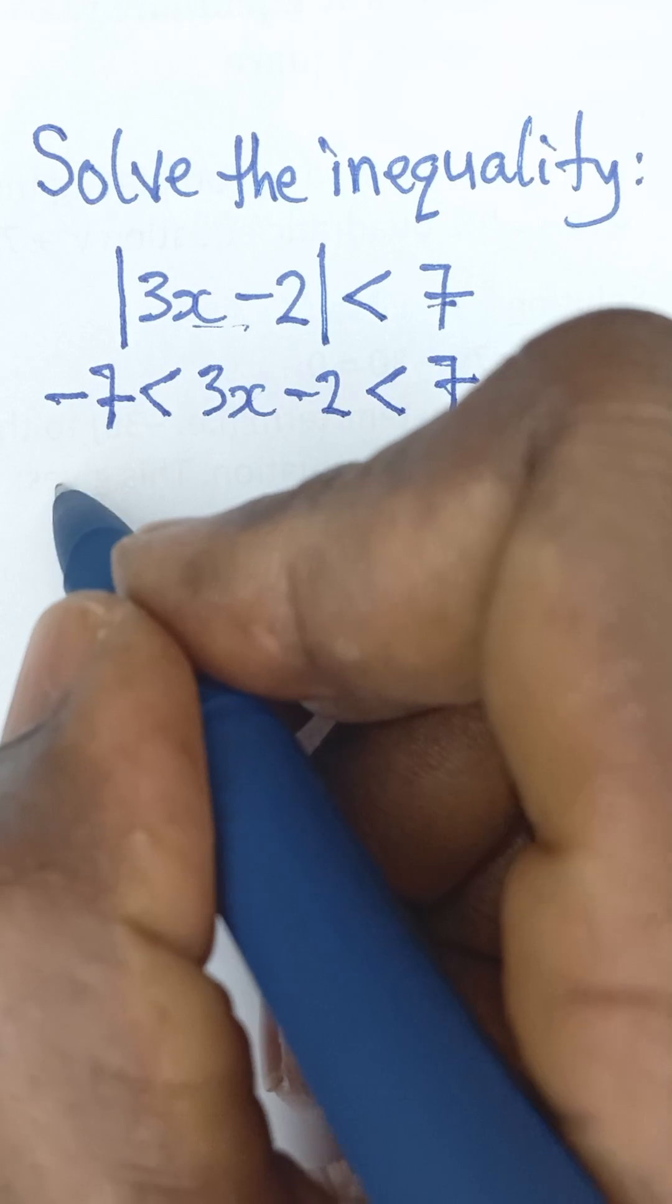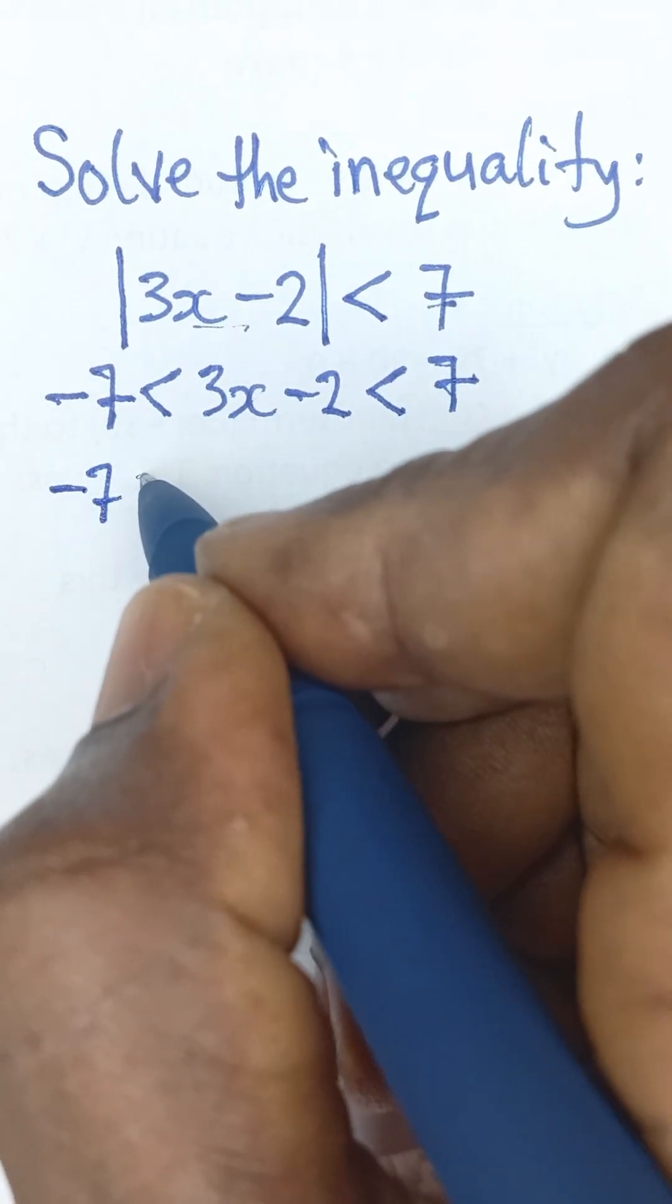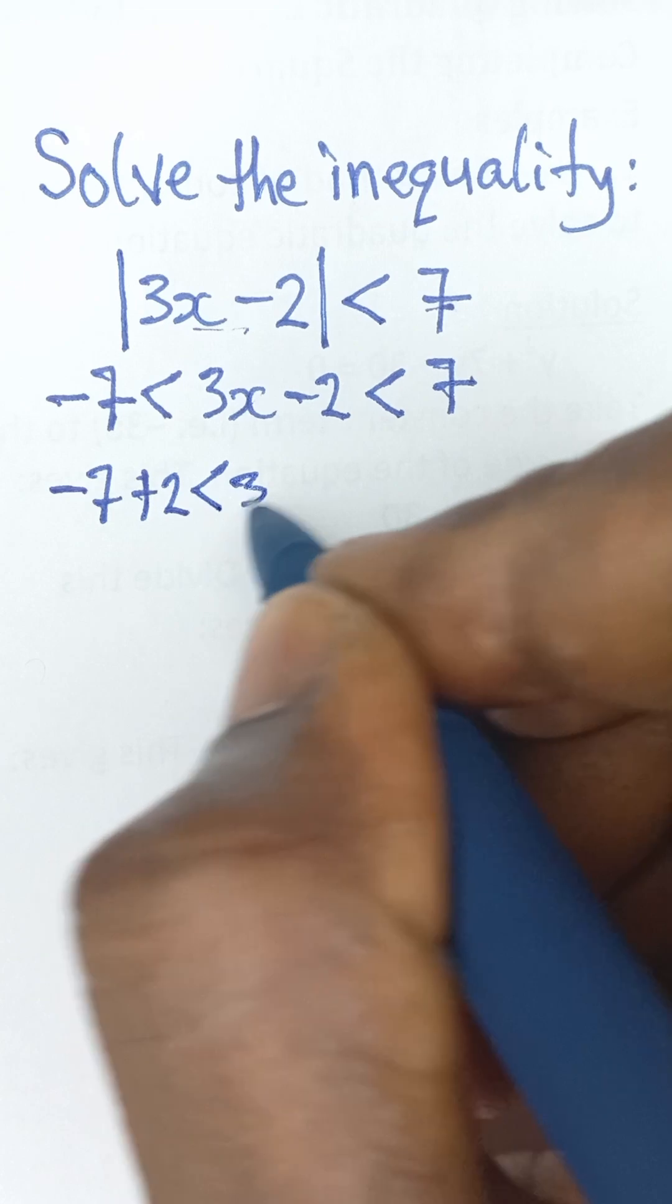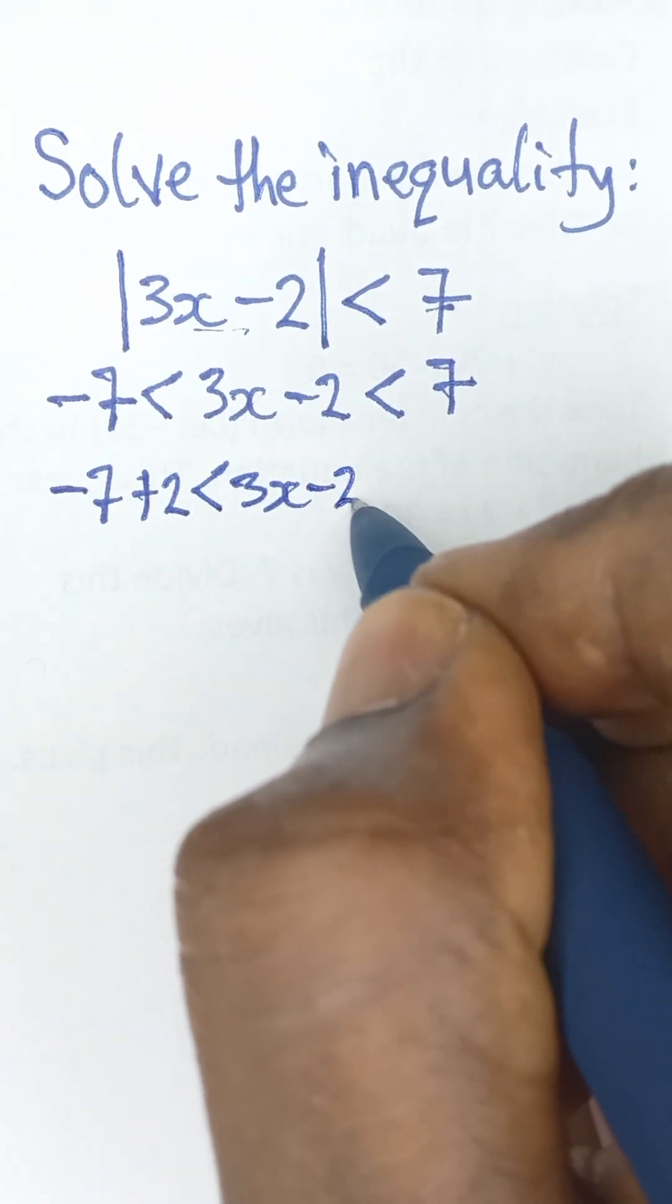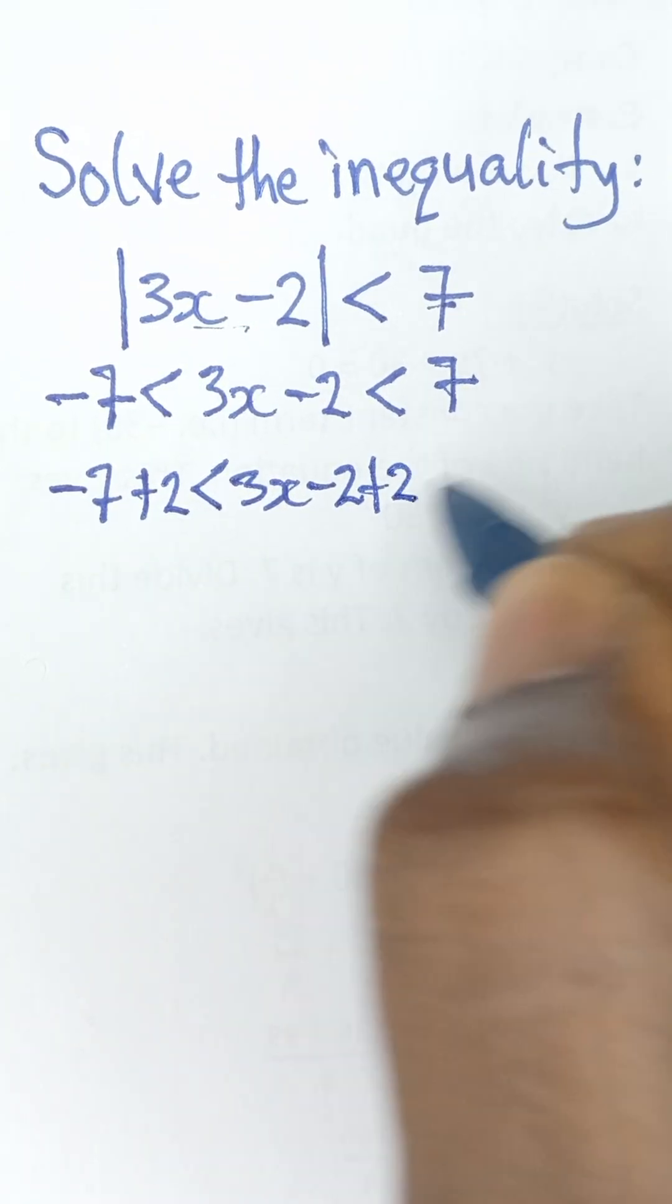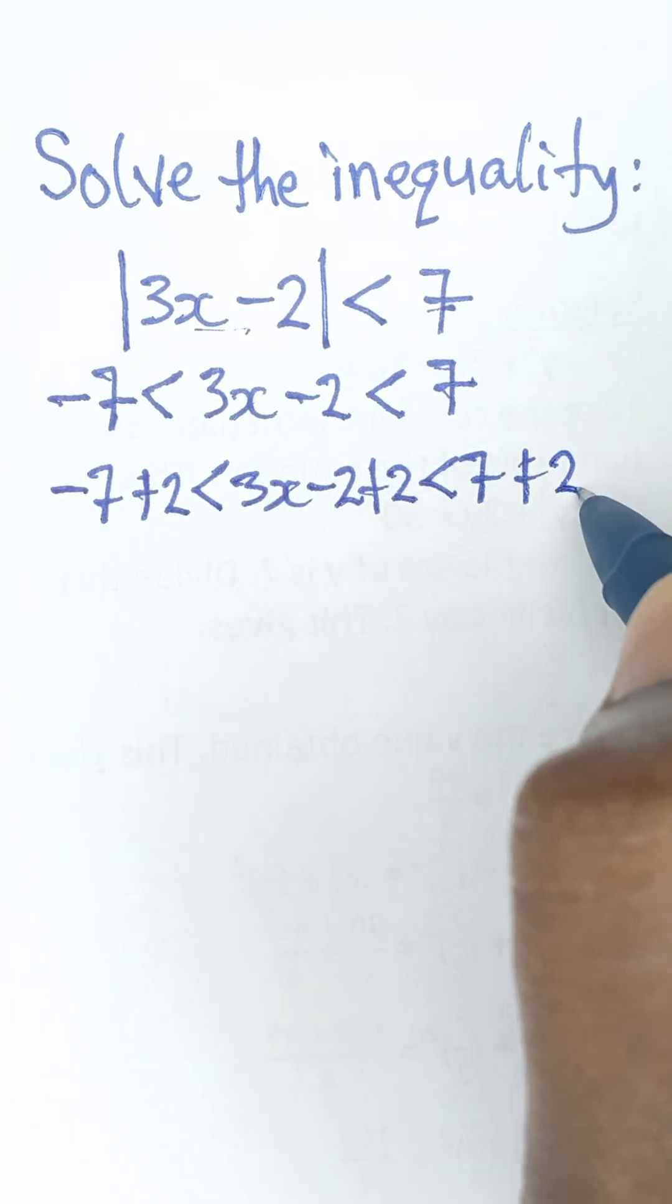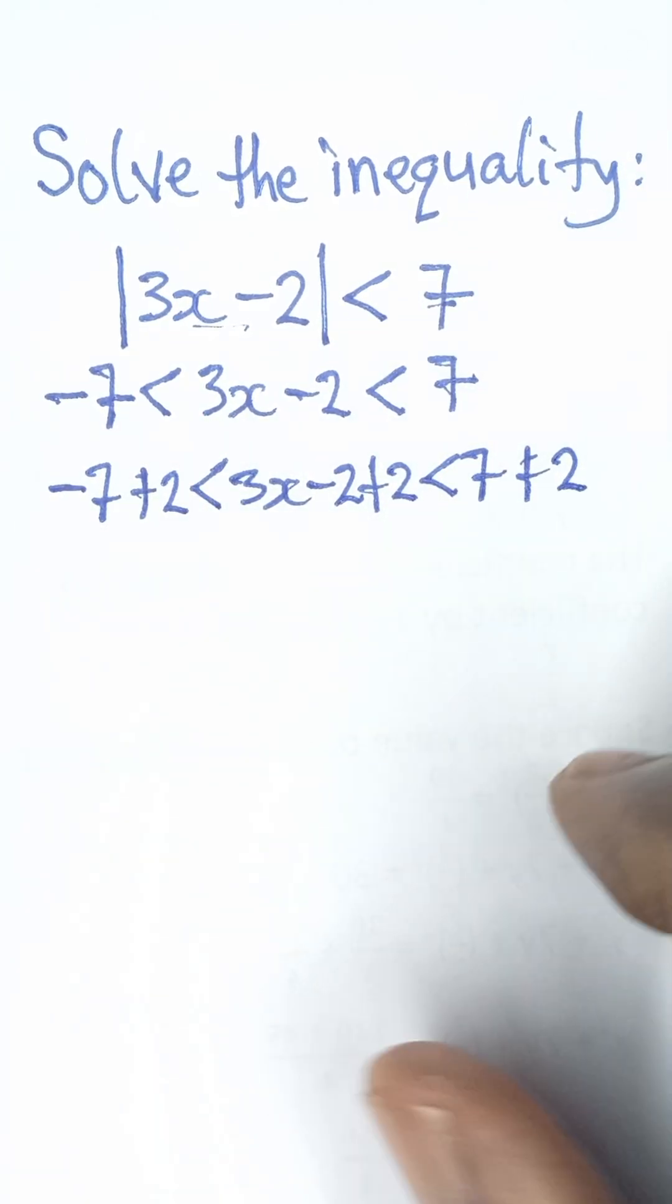So for us to do that, we are going to say negative 7, then we add 2, we say less than 3x minus 2, we also add 2, and we say less than 7 plus 2. We also add 2 to each side of the equation.